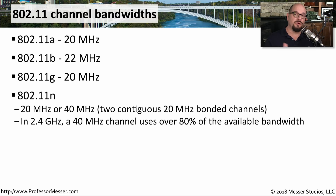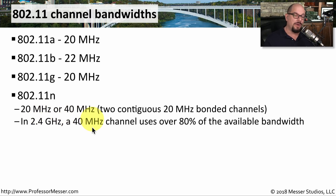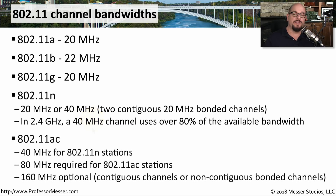To increase the amount of data we could send over wireless networks, we needed to use more of these frequency ranges. With 802.11n, we have the choice of either 20 megahertz or doubling it to a 40 megahertz channel bandwidth. That means with 802.11n running at 2.4 gigahertz, a 40 megahertz channel would use 80% of the available frequencies in the 2.4 gigahertz range, leading to bandwidth shortcomings.